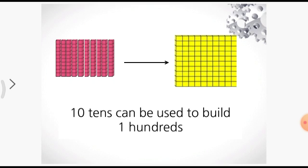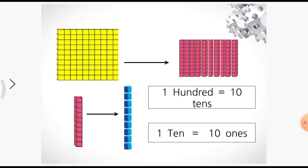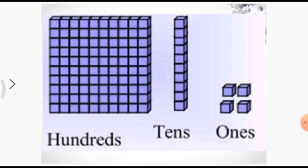Now slowly come to page number twenty-three. Here it is given how to write numbers beyond hundred. To write a three-digit number we need three places. We need three places and they start from the very right to left. These places are called ones, tens and hundreds. Here O stands for ones, T stands for tens and H stands for hundreds.